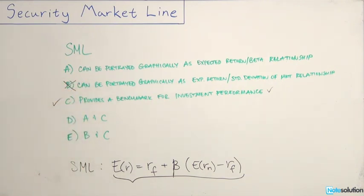Let's look at A. Is A correct? Well, A says the SML can be portrayed graphically as the expected return beta relationship. Again, without having to even graph it, let's look back at the SML equation.